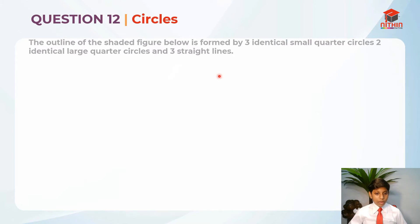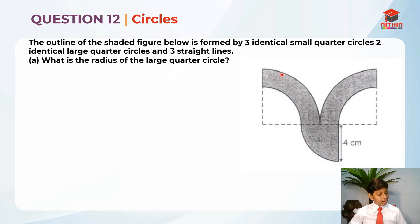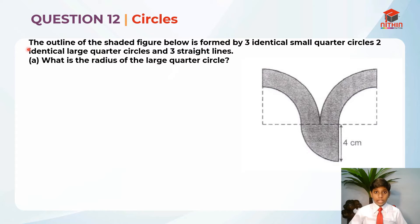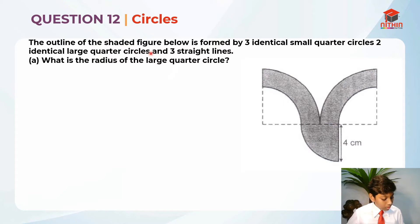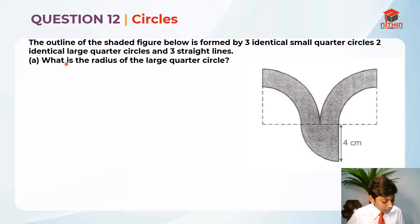Question 12 is testing us on circles. This question has two parts, part A and part B. I'll be going through part A right now and part B later in this video. So let's read the question first. The outline of the shaded figure below is formed by three identical small quarter circles, two identical large quarter circles and three straight lines. Part A: what is the radius of the large quarter circle?